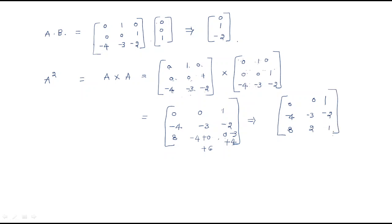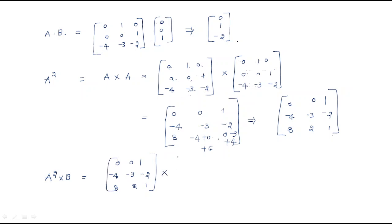So A² × B: A² is [0,0,1 / -4,-3,-2 / ...] and B is [0,0,1]ᵀ. By doing the simplification, we get 0, then -2, then 1. So A²B = [1, -2, 1].